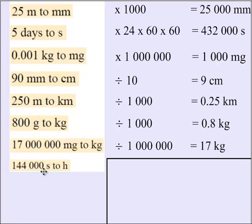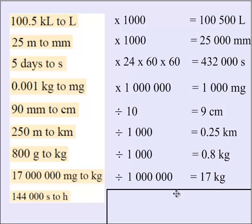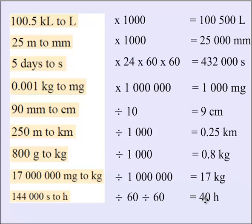The last one, we need to use our more traditional table because King Henry doesn't cater for time. And it's 144,000 seconds to hours. So we're going from seconds to minutes, so we divide by 60, and then we divide by another 60 to turn our minutes into hours. So we do that. Divide by two 60s gives us 40 hours. Okay, thanks for your time, and good luck with the work.